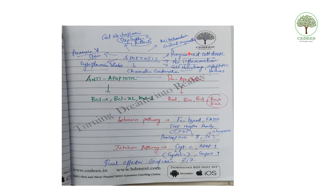Looking at the notes on important features of apoptosis: apoptosis is a programmed cell death. The critical organelle for apoptosis is the mitochondria. Key features include no inflammation, cell shrinkage, apoptotic bodies, cytoplasmic blebs, and chromatin condensation. Annexin 5 is the stain used, and in gel electrophoresis a step-ladder pattern is seen.